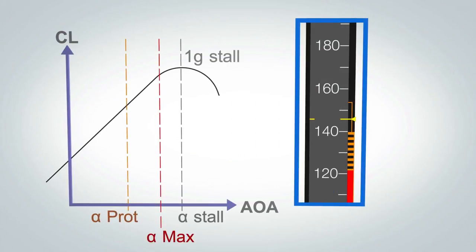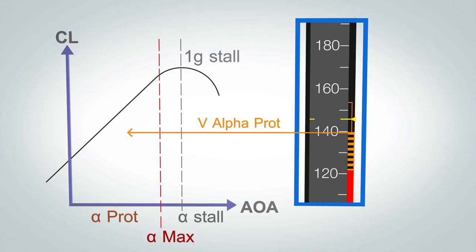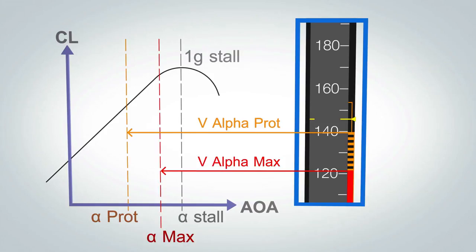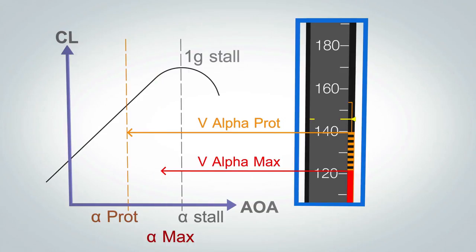As a reminder, on the PFD, the following two speeds are functions of the current aircraft angle of attack. V-alpha prot is a prediction of what the aircraft's speed is when the aircraft flies at an angle of attack equal to alpha prot. It is the speed indicated at the top of the black and amber strip. V-alpha max is a prediction of what the aircraft's speed is when the aircraft flies at an angle of attack equal to alpha max. It is the speed indicated at the top of the red strip. Another speed in the low speed domain is the VLS, whose computation does not depend on the angle of attack.